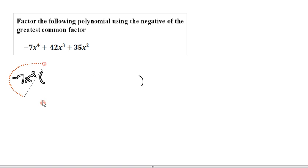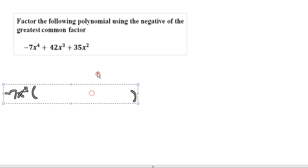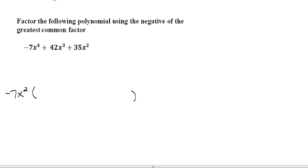So let's figure out what the something is now, what goes inside the parentheses. We get that by taking the GCF and dividing that into each one of those original terms in the polynomial.